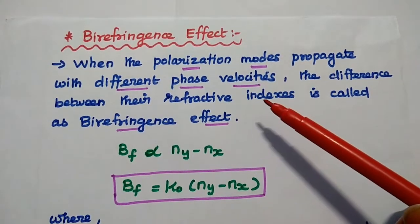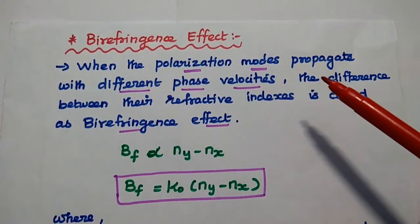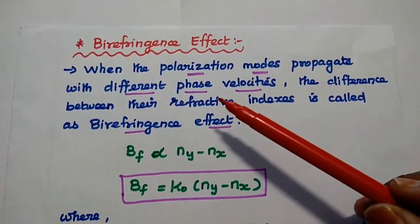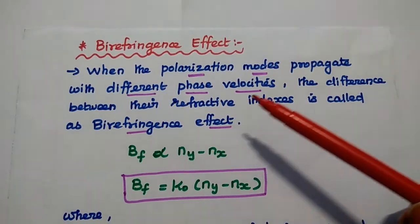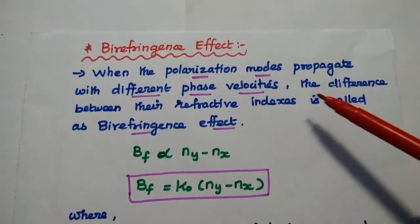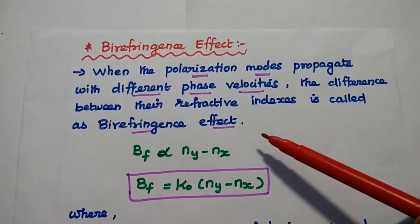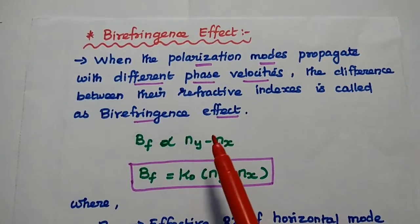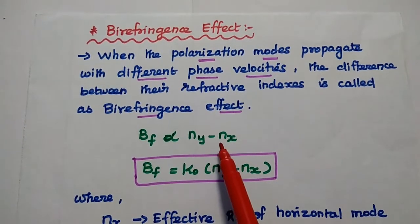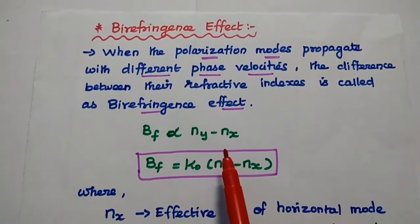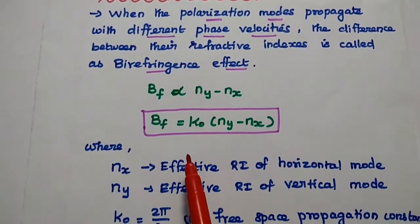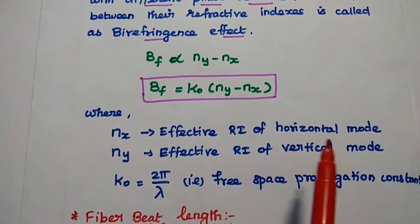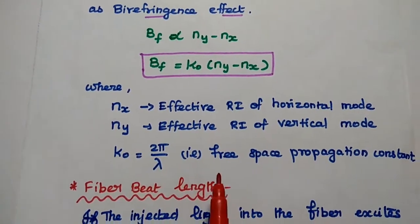The next topic is the birefringent effect. There are two independent polarization modes available in the single mode fiber: one is vertical polarization and the next is horizontal polarization. When these two polarization modes propagate with different phase velocities in the fiber core, the difference between their refractive indexes is called the birefringent effect. It is denoted as BF, directly proportional to the refractive index difference ny − nx, and given as BF = k₀ × (ny − nx). Here, nx is the effective refractive index of the horizontal mode and ny is the effective refractive index of the vertical mode.